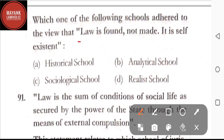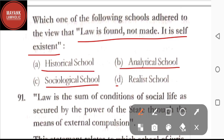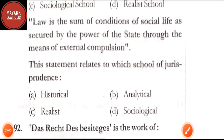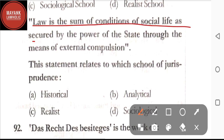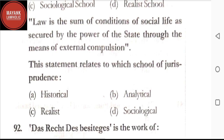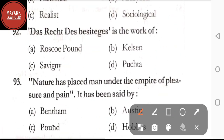Question number 90: which one of the following schools adheres to the view that law is found, not made — it is self-existent — option A: historical school; option B: analytical school; option C: sociological school; option D: realist school. The correct answer is option A, historical school. Question number 91: 'Law is the sum of conditions of social life as secured by the power of the state through the means of external compulsion' — this statement relates to which school? The correct answer is option D, sociological school.